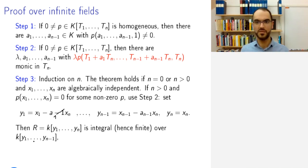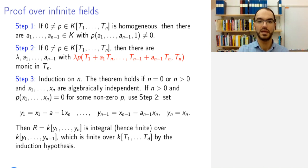So by using this monic, the last variable, when we add it, we get something that is integral over the previous. And by induction, the previous part was already finite over k[T1,...,Td]. And so therefore, the theorem follows by composing finite over finite is finite.